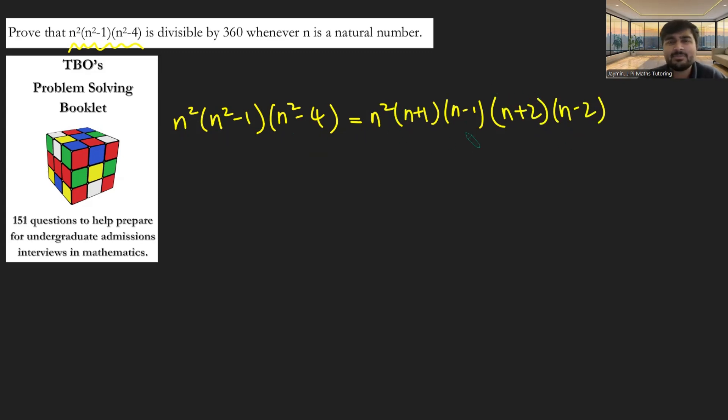And we're trying to show that this expression is always a multiple of 360. Well, 360 is just 2 cubed times 3 squared times 5. That's its prime factorization. You can check that if you don't believe me. And so in order to show that this thing here is always a multiple of 360, I need to show that it's a multiple of 2 cubed, a multiple of 3 squared, and a multiple of 5. And so I've kind of broken this big problem down into just some smaller cases.